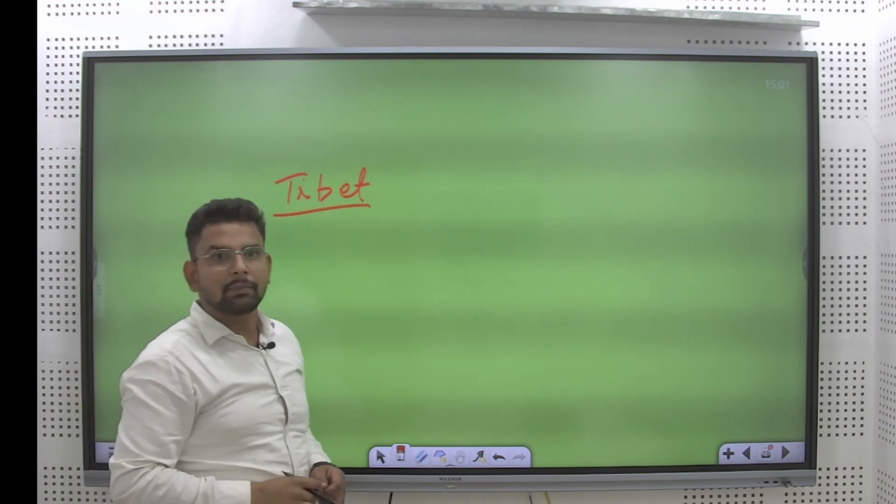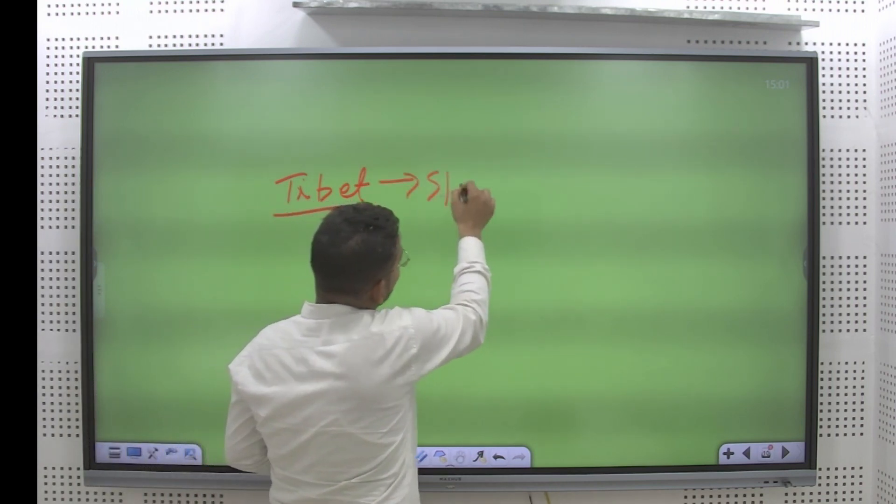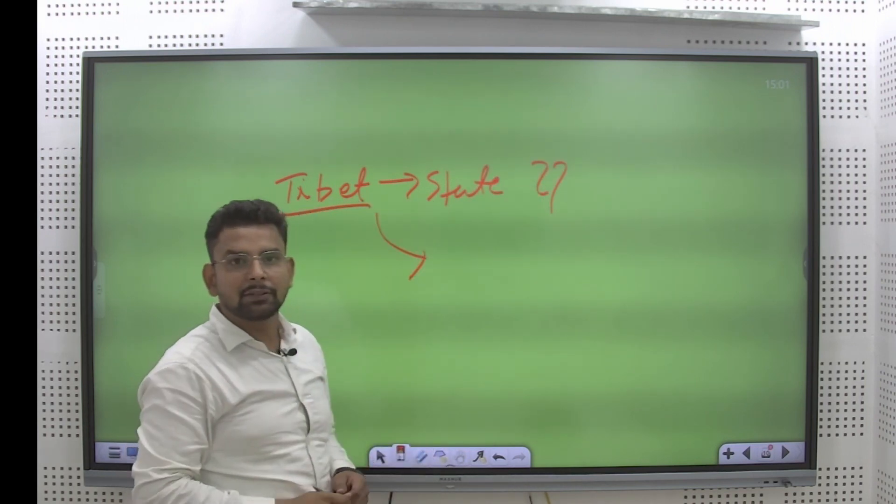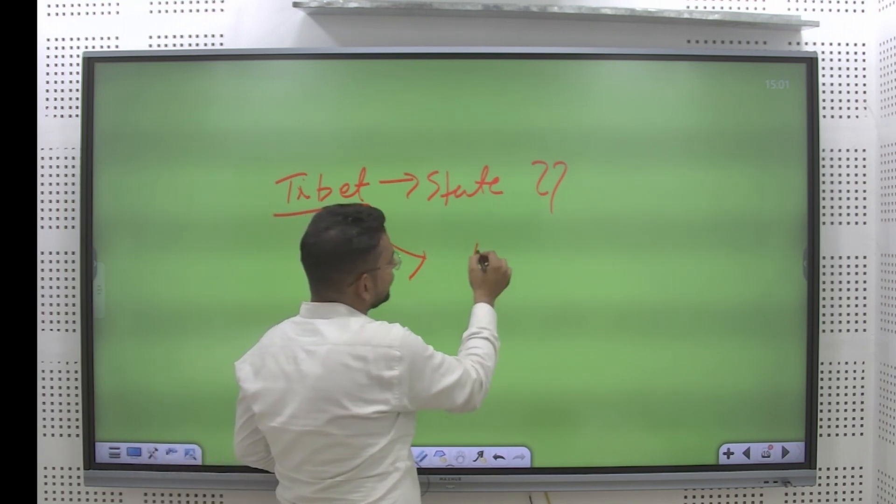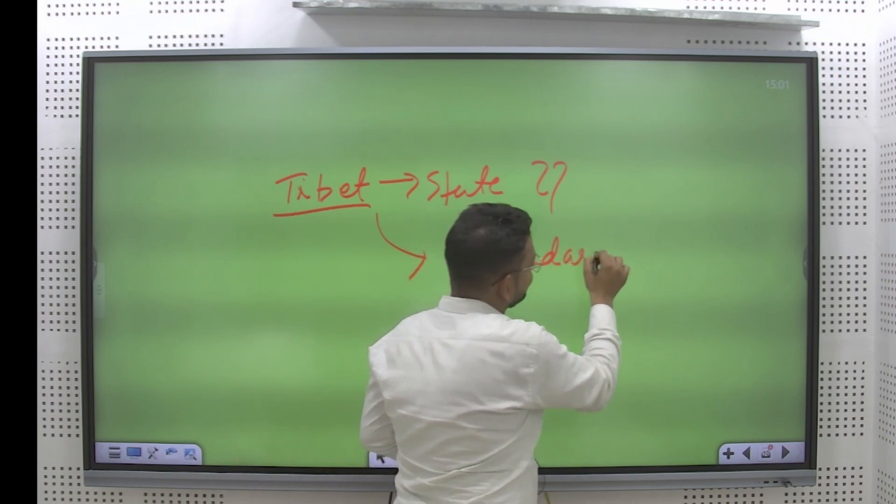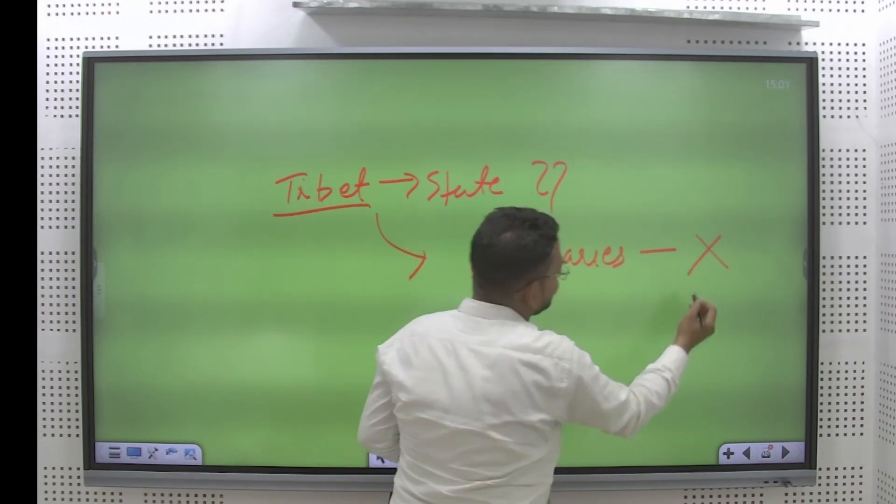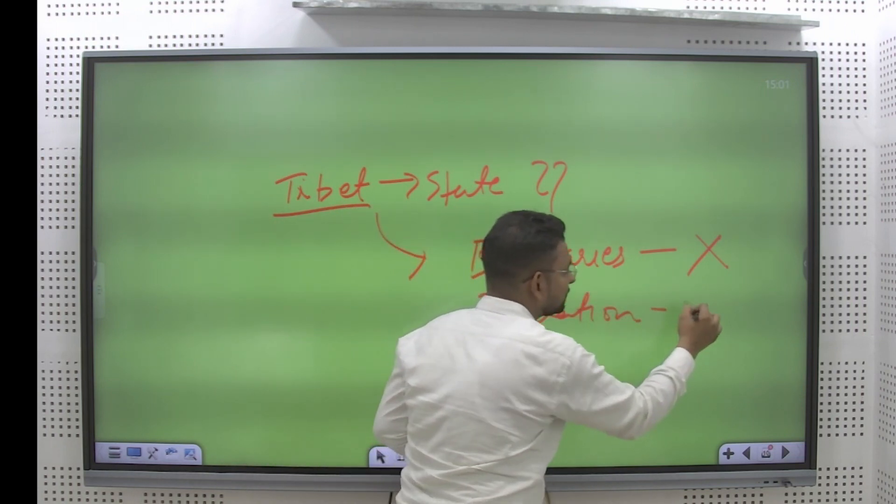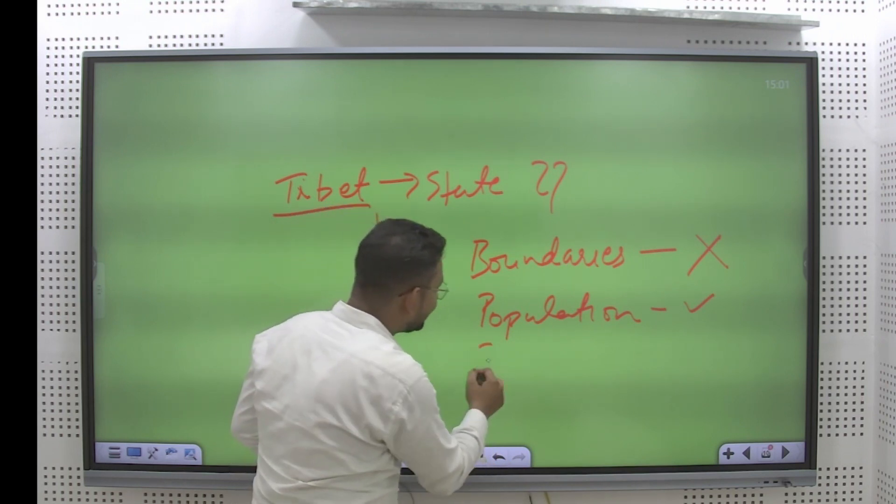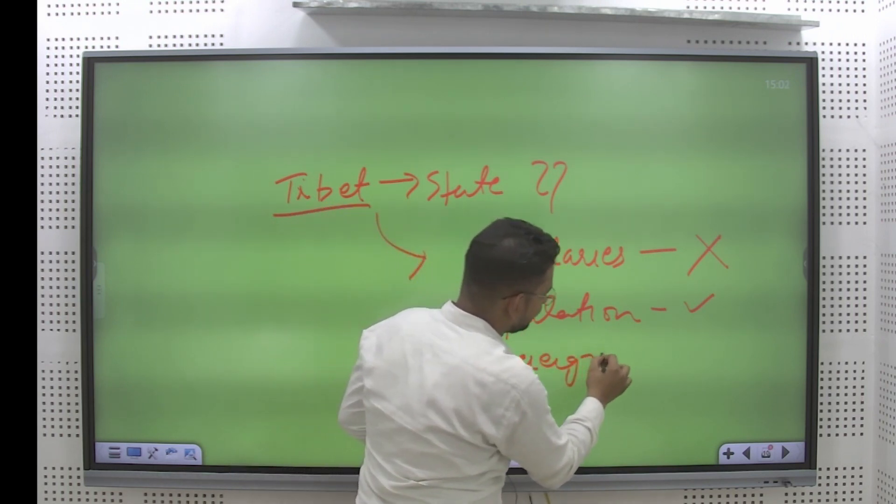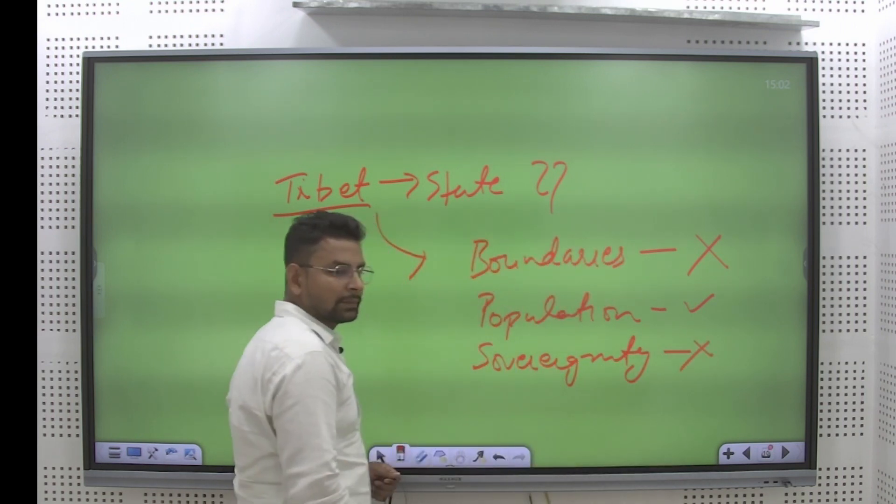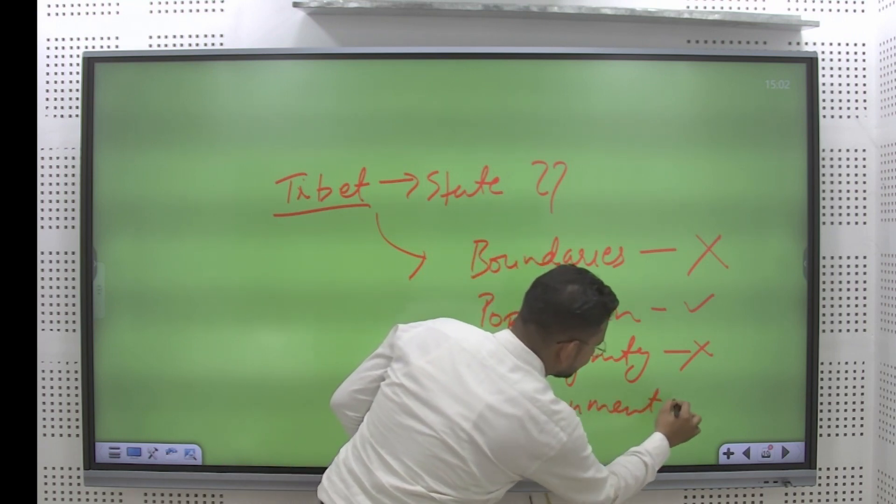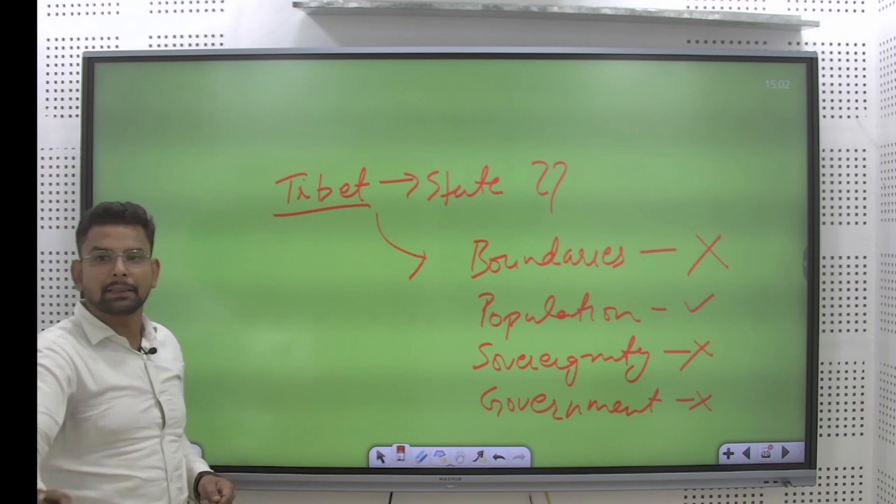Tibet is a geographical, Tibet is a state or not. We are going to analyze whether Tibet is a state or not. Now, the very first condition was geographical boundaries. Is it having the boundaries? No. Population? Yes. Third, sovereignty? No. And the final one is government. No. So we cannot call Tibet as a state.